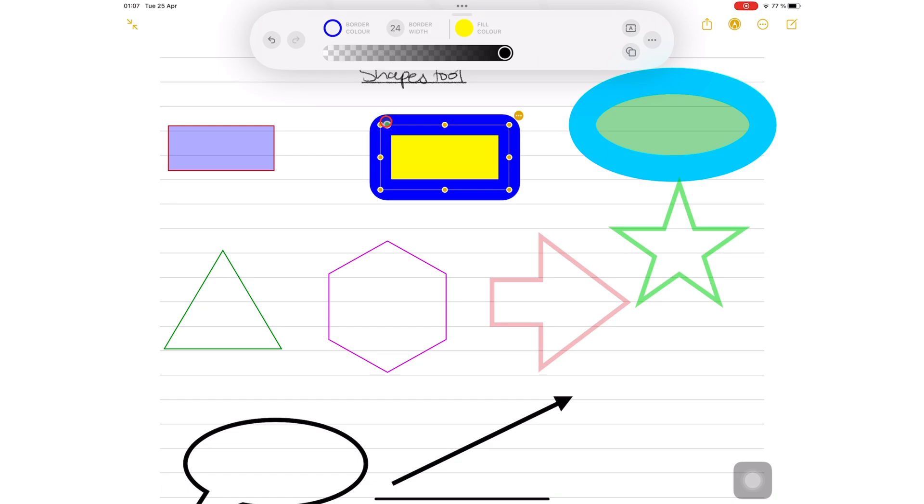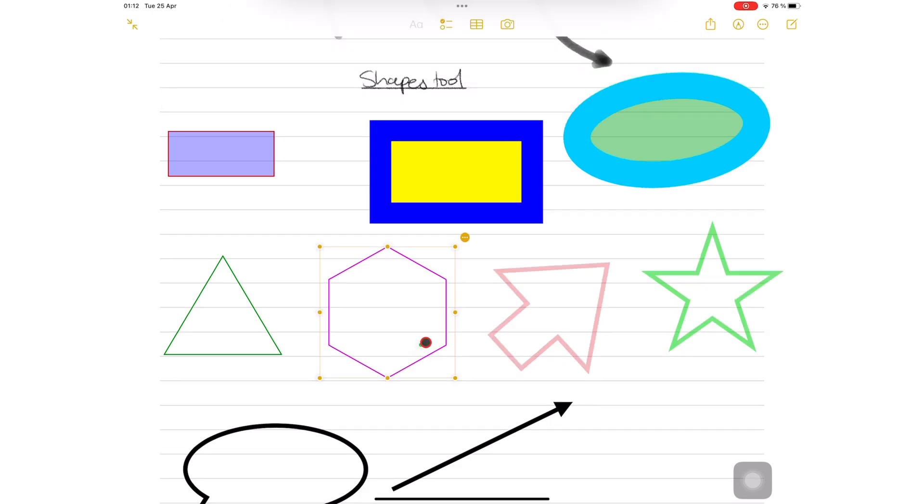The green dot on some shapes changes their curves, number of shapes, or how the shape looks.